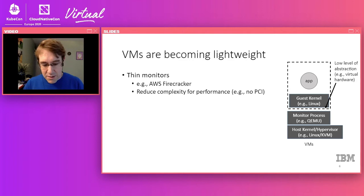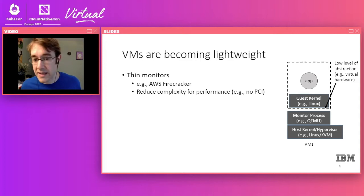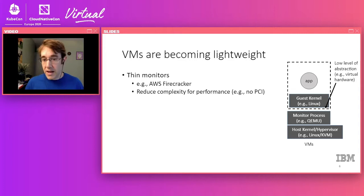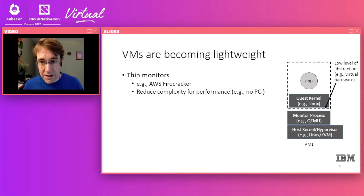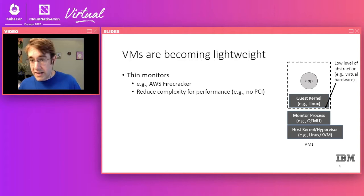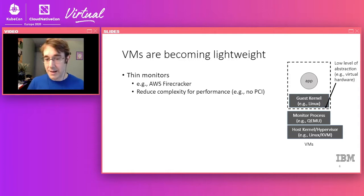To dig a little deeper into why and how VMs are becoming lightweight, I have a picture here representing a standard virtualization stack. At the bottom you have a host kernel or hypervisor — something like Linux with KVM. On top of that you'd have a monitor, the thing that does the virtualization, like QEMU, Cloud Hypervisor, or Firecracker. On top of that you have the virtual machine itself. The important thing is that there's a very low level of abstraction between the VM and the host software below — this is where isolation and security come from. Inside the VM you typically have a guest kernel, normally Linux, and your application runs on top of that. Given that huge stack, it's no wonder VMs have a reputation for being very heavyweight.